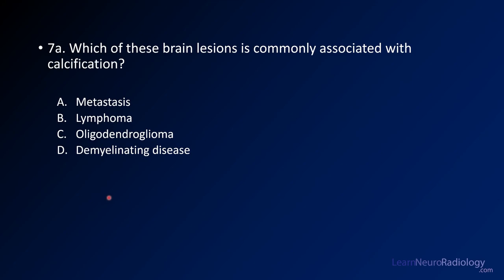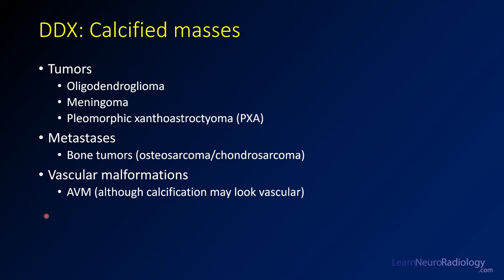This is getting at which brain lesions most commonly calcify. When you have calcified masses in the brain, you're thinking about tumors: oligodendrogliomas, meningiomas, and PXAs particularly can calcify. Metastases will rarely calcify unless they are bone tumors — osteosarcomas, chondrosarcomas can calcify. Vascular malformations such as AVMs and hemangiomas can also calcify. Keep those in mind if you're looking at a calcified mass.